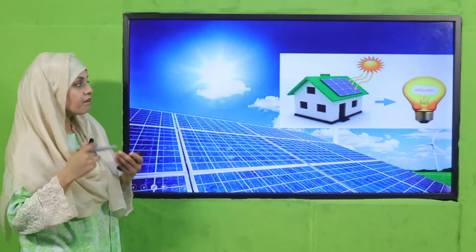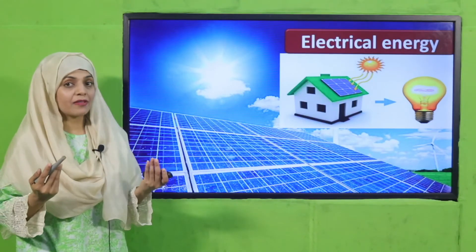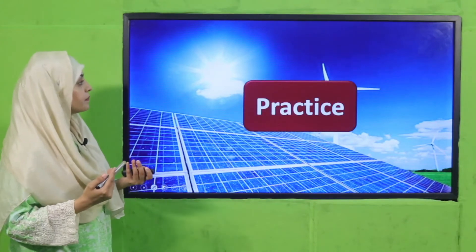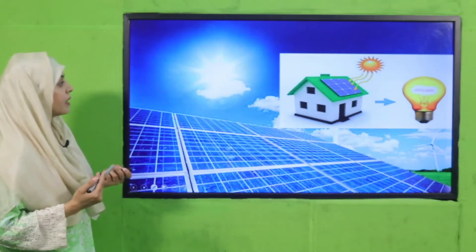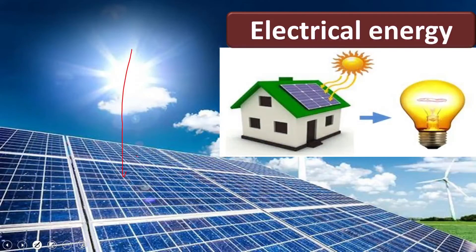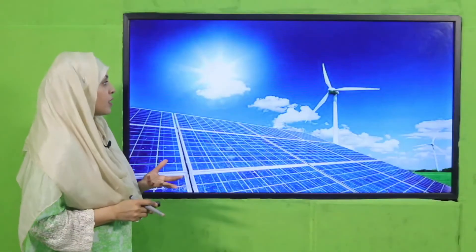Next is electrical energy. The sun also produces electrical energy. When sunlight falls on the solar panels, these solar panels convert the heat and light of the sun into electricity, and this is used in our homes. This is how the sun's energy is also used in electricity generation.